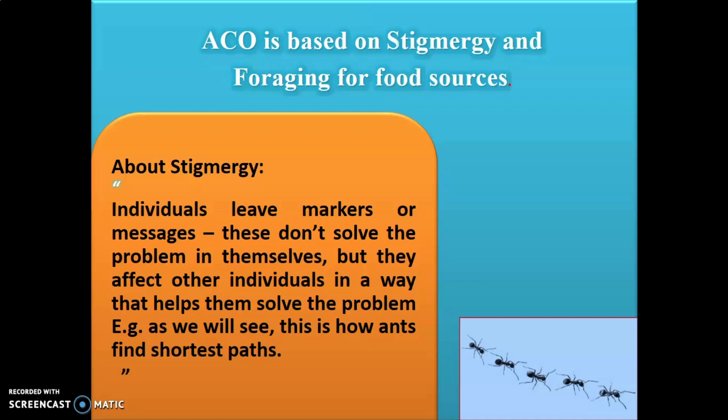Stigmergy means individual ants leave markers or messages. Since they have very limited vision and auditory capability, how do they communicate — what is the medium of their communication? Each ant, when moving from one place to another, lays down a chemical substance known as pheromone. By laying down this chemical substance, individual ants leave markers. These markers don't solve the problem themselves but affect other individuals in a way that helps them solve the problem. By the smell of this pheromone, other ants can find out the path to go to the food source.